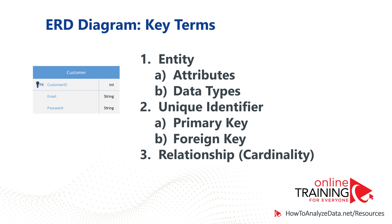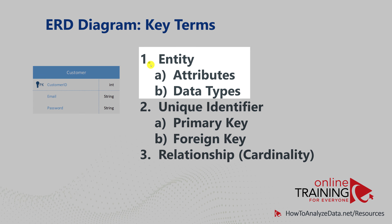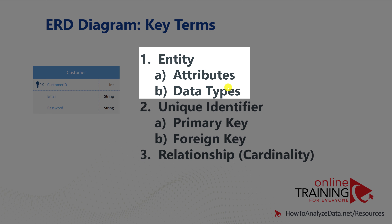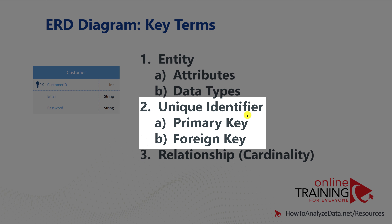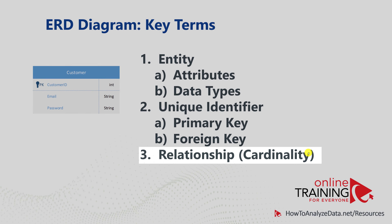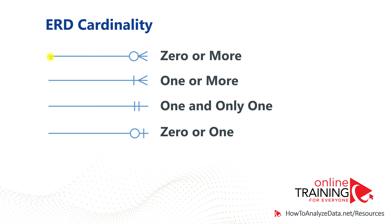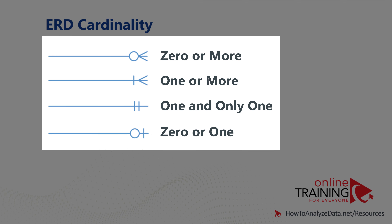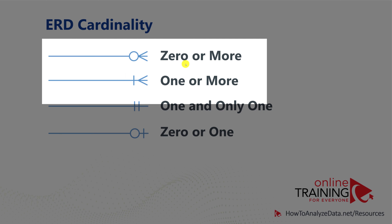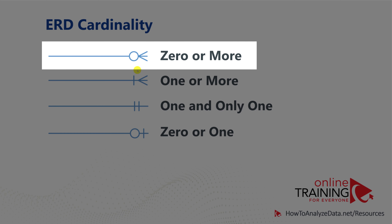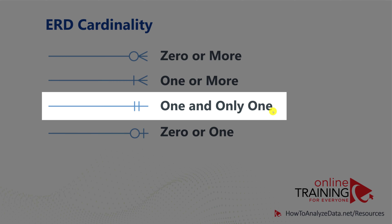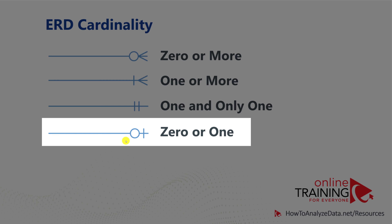To define a successful ERD diagram, you need to define entities with attributes and data types, create unique identifiers as primary and foreign keys, and define relationships in the form of cardinality. Cardinality is defined as a line connecting two entities with symbols on each side. There are at least four types of cardinalities: zero or more, one or more, one and only one, and zero or one.